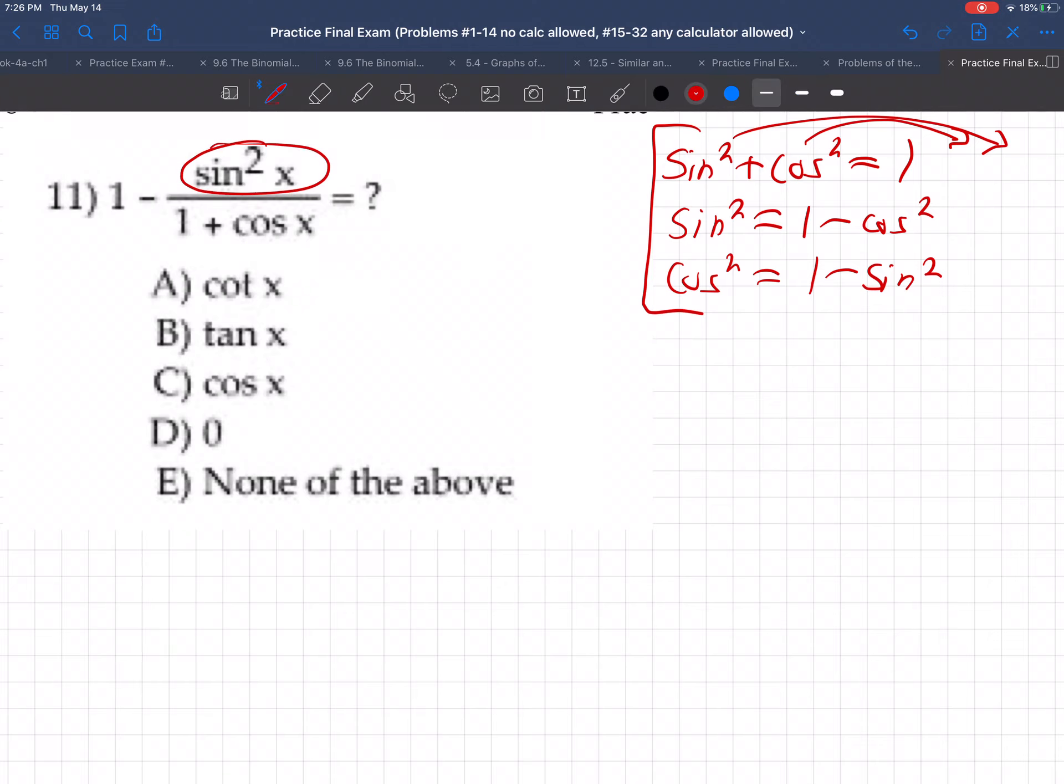So right here, sine squared, that's 1 minus cosine squared. So this becomes 1 minus, and then the sine squared at the top is 1 minus cosine squared over 1 plus cosine. Now, what can we do with that?